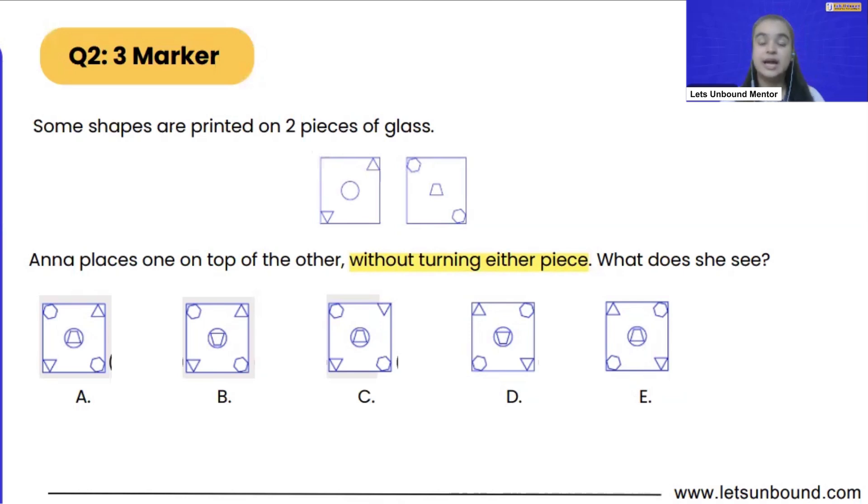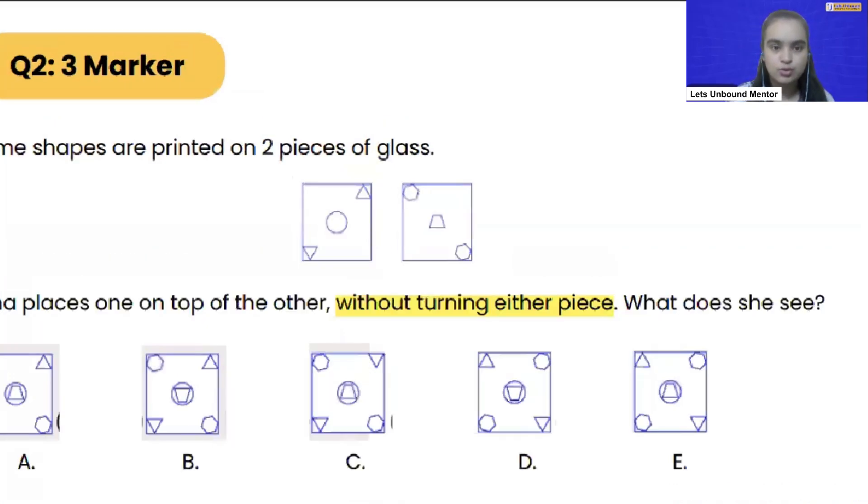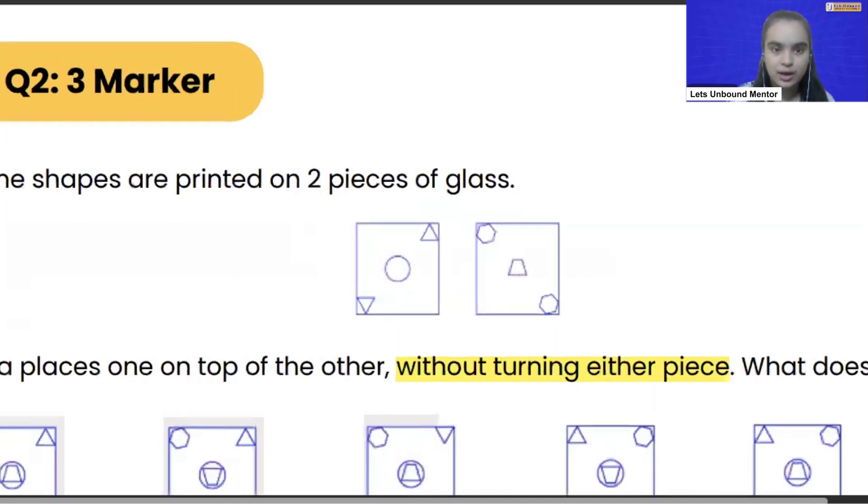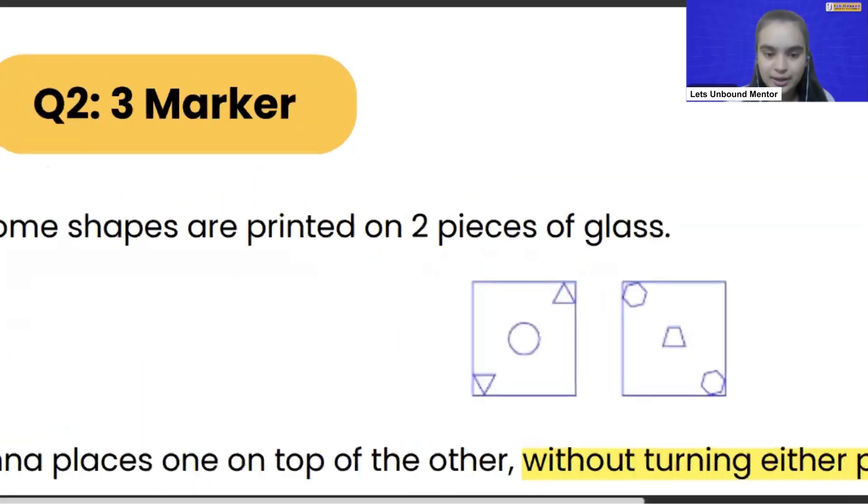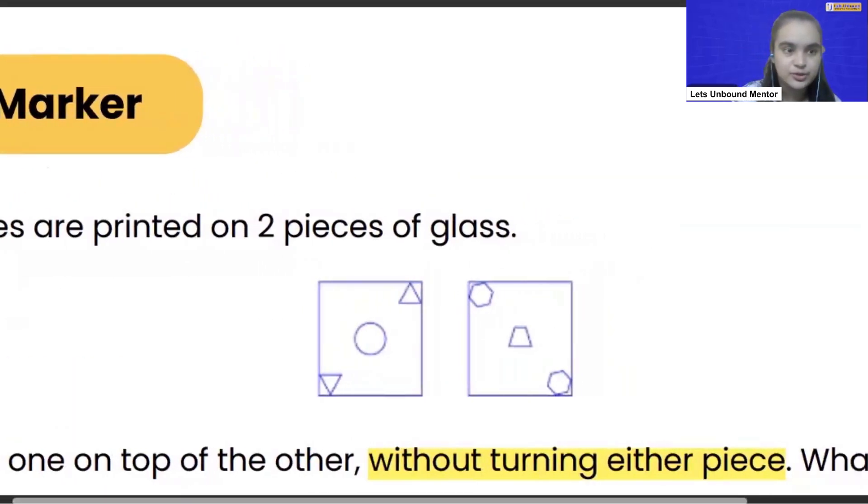This question is really very easy. We cannot flip or rotate any of the pieces because they mentioned without turning either piece. What we will do is just draw the second piece exactly over the first piece. Let me zoom in and let's do our drawing. I will be drawing the exactly same thing over the first piece.